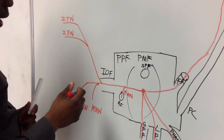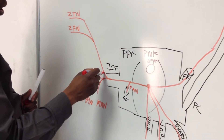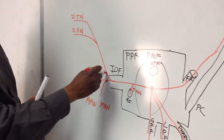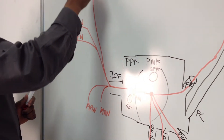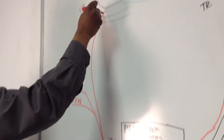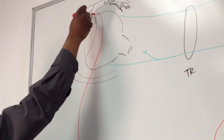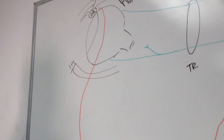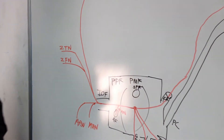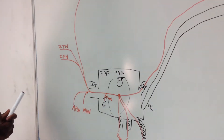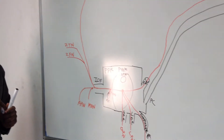You then have another branch which climbs up all the way to the lacrimal gland. That's the branch heading up to the lacrimal gland, and I think that's enough detail for V2.